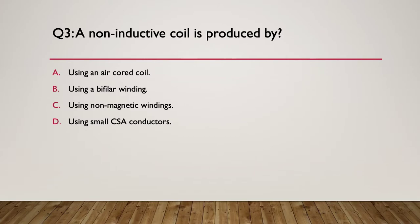Question 3: A non-inductive coil is produced by what? A. using air core coil, B. using a bi-filar winding, C. using a non-magnetic winding, or D. using small cross-sectional area conductors. So pause here while you think about it.